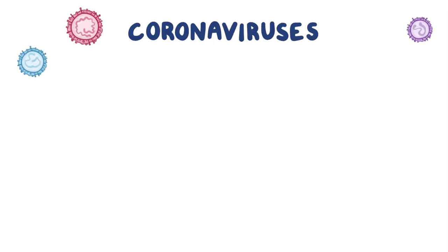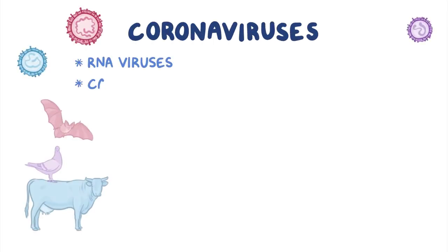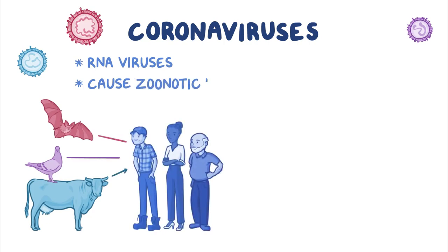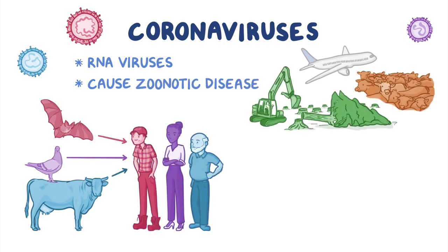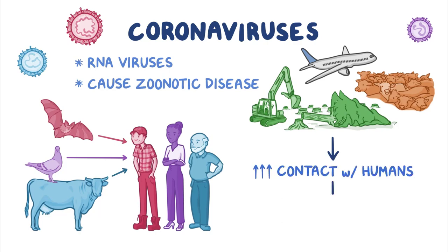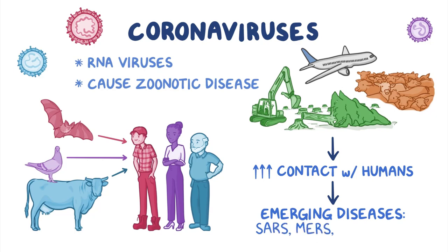As a quick recap: coronaviruses are a group of RNA viruses, some of which can cause zoonotic diseases in humans. A variety of environmental and social changes have increased the risk of the viruses coming in contact with humans, leading to emerging diseases like the SARS, MERS, and COVID-19 outbreaks in the 21st century.